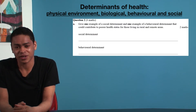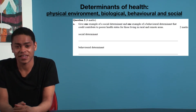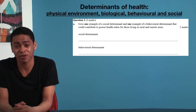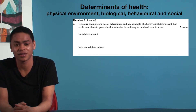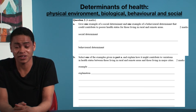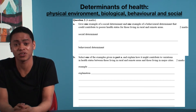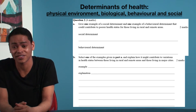Here's a question from the 2013 VCAA exam. Part A: give one example of a social determinant and one example of a behavioural determinant that could contribute to poorer health status for those living in rural and remote areas. Part B: select one of the examples given in Part A, and explain how it might contribute to variations in health status between those living in rural and remote areas and those living in major cities.